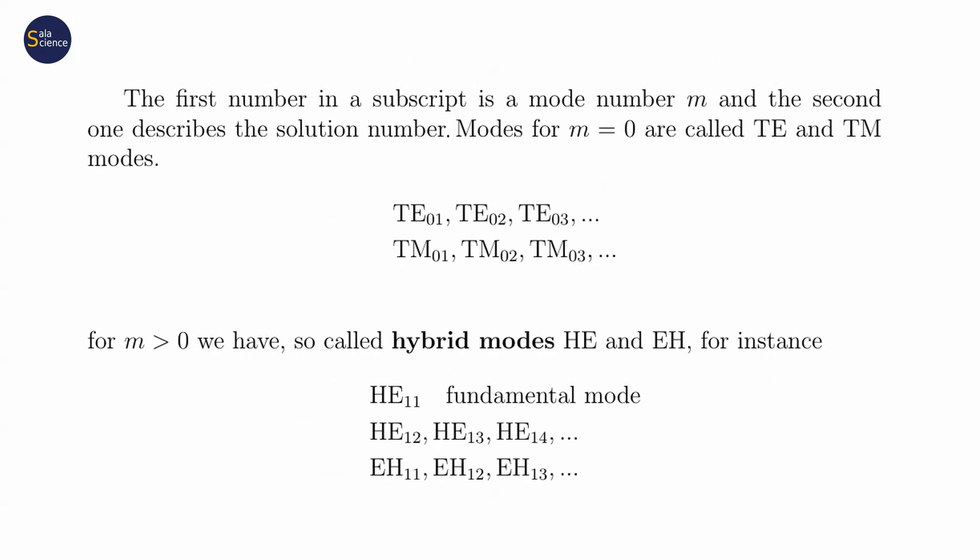How do we classify modes, these distributions of the electric field? Well, if m is equal to zero, it means that we have either TE or TM mode. The second number in a subscript is just a solution number. So we have TE01, TE02, TE03 and so on.